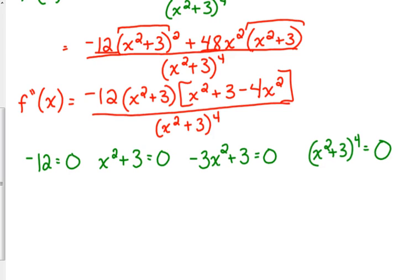Technically I could have canceled the x squared plus 3 — I overlooked that, but it's okay. Negative 12 would never equal 0. Could x squared plus 3 ever equal 0? No — you're squaring a number and adding 3 to it, that's always going to be positive. So we don't have anything from that, and that means I don't have anything from the denominator either.